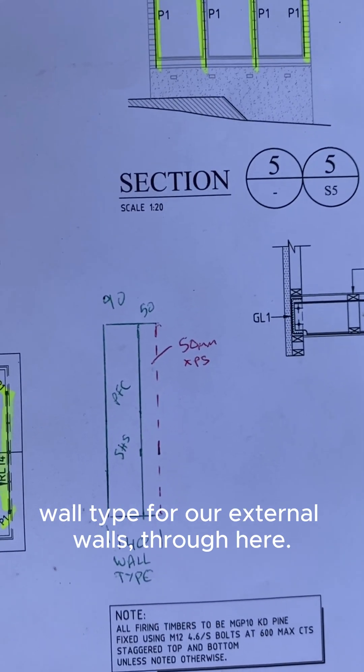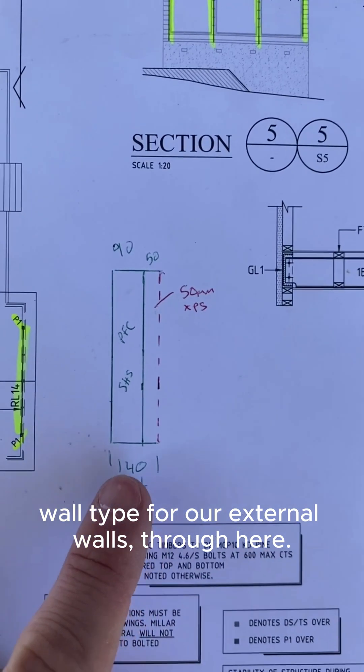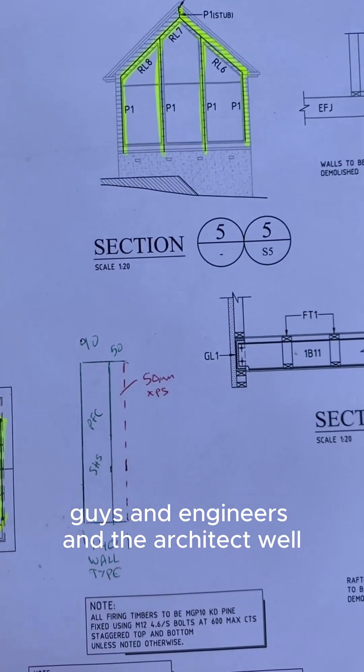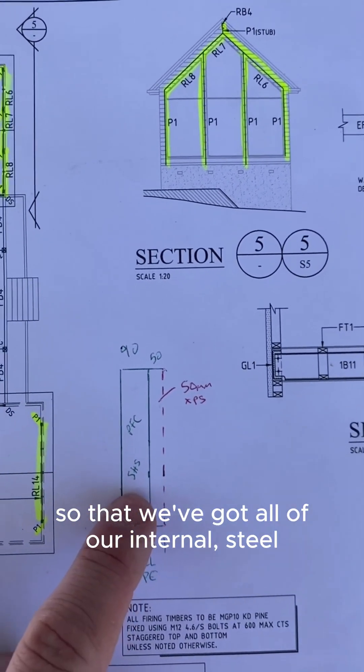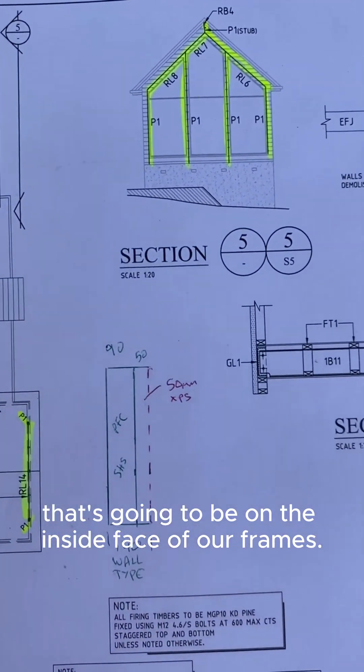So we've got a 140 wall type for our external walls through here. When we're detailing all of this with our steel guys and engineers and the architect, we'll make sure we're noting this so that we've got all of our internal steel that's going to be on the inside face of our frames.